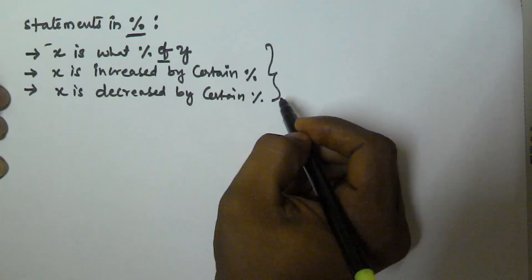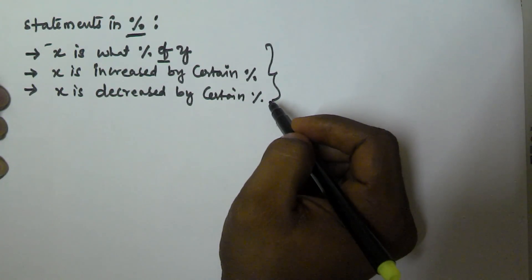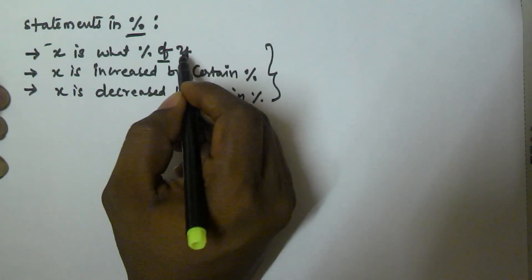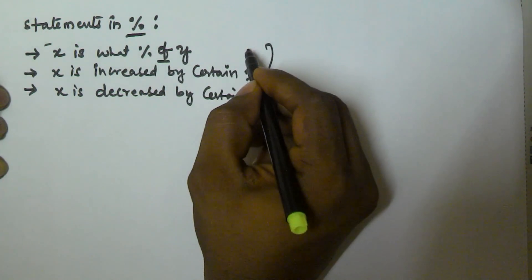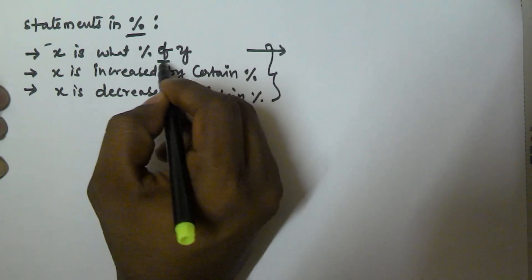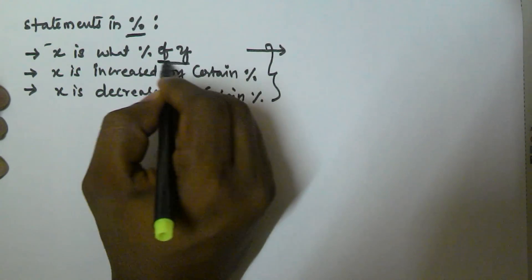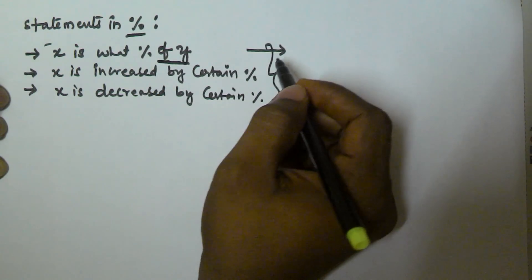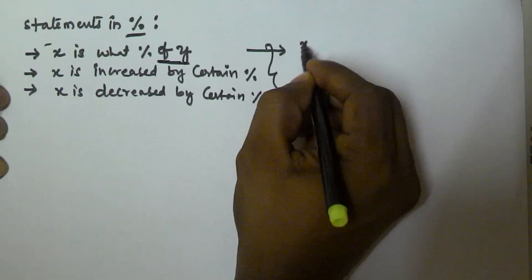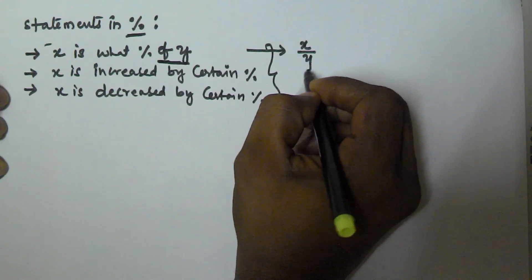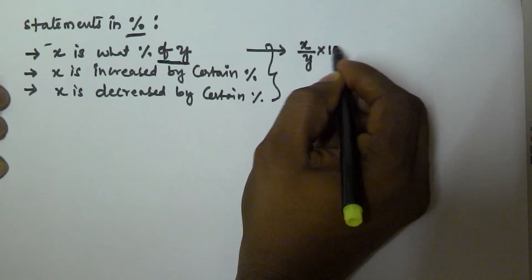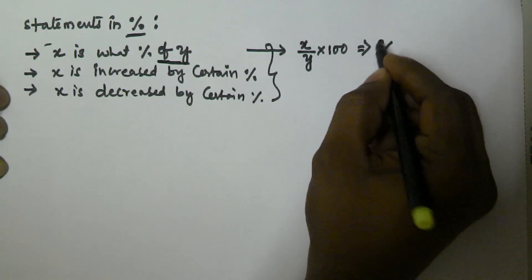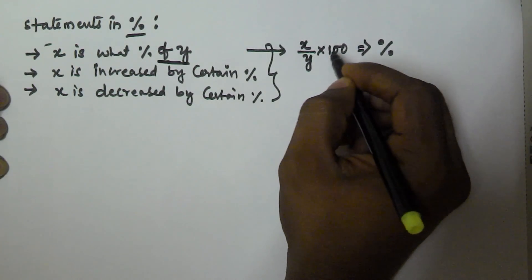To solve the statement 'x is what percentage of y' — whenever we get 'of y', y is going to be the denominator. So x divided by y, then multiplied by 100, will give the percentage. x by y into 100 will give the percentage.